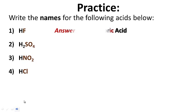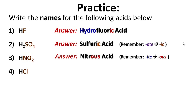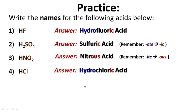First one: hydrofluoric — notice there's no oxygen, so we put hydro and ic on the end to get hydrofluoric acid. Next: sulfuric acid — the anion is sulfate, so we change ate to ic to get sulfuric acid. Next: nitrous acid — we change nitrite to us, so we get nitrous acid. And the last one: hydrochloric acid — no oxygen, so we put hydro and ic on the end.